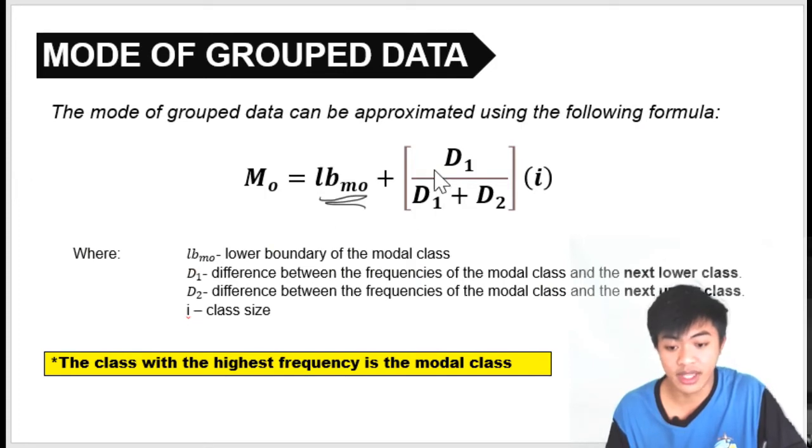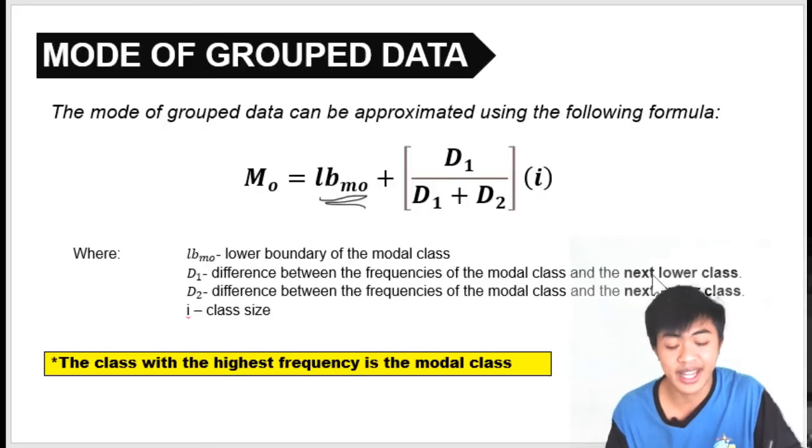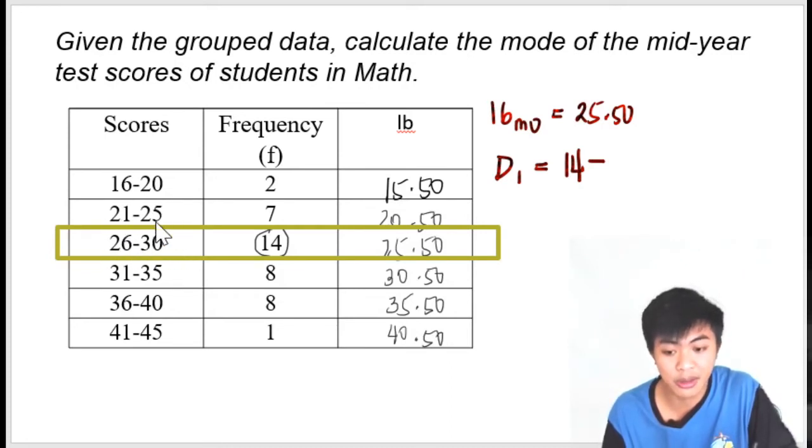Now we identify D sub 1. D sub 1 is the difference between the frequencies of the modal class and the next lower class. What is the frequency of the modal class? It is 14 minus the frequency of the next lower class. This is the modal class, and we subtract the frequency of the lower class just next to the modal class. This is the modal class, and this is the lower class just preceding the modal class. So this will be D1: 14 minus 7, and D1 equals 7.